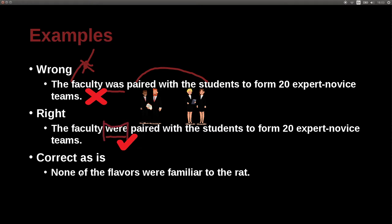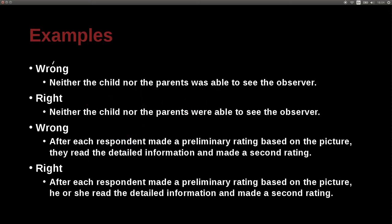'None of the flavors were familiar to the rat' — 'were' is correct because none means each one, one by one, were not familiar. 'Neither the child nor the parents was able to see the observer' is wrong; it should be 'were able to see the observer' — same idea: neither child nor parents were acting as a group but individually.